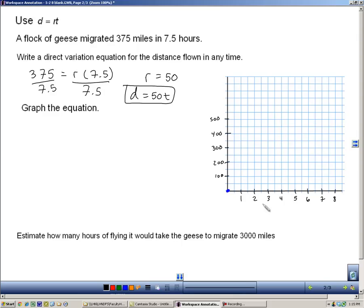I'll start by labeling my graph with the hours here on the bottom, because that's the independent value and the miles here on the side. And now I'll graph the point. 7.5 hours is about here, and that's 375 for miles, which is about right there. So now I can draw my line. And that's the graph of my equation, or my direct variation, d equals 50t.